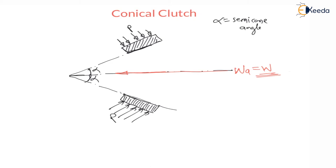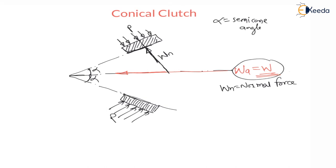For calculation we have to consider the normal reaction. For this clutch surface we are considering normal reaction — normal means perpendicular. WN is the normal reaction on the clutch plates, and W is the axial force along the axis of the clutch shaft.